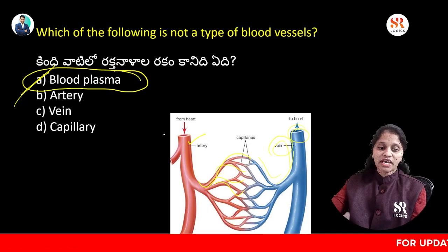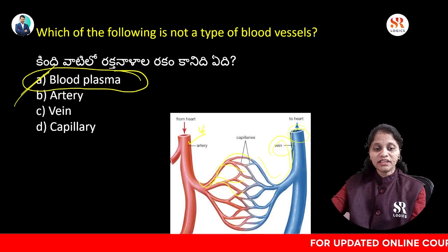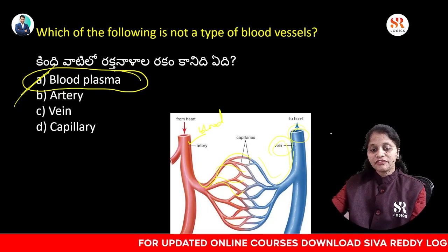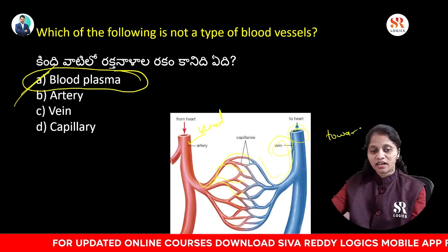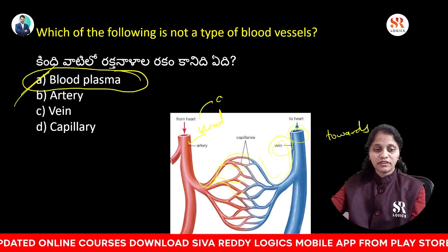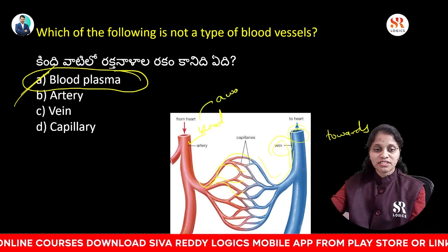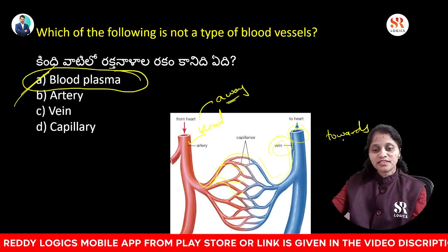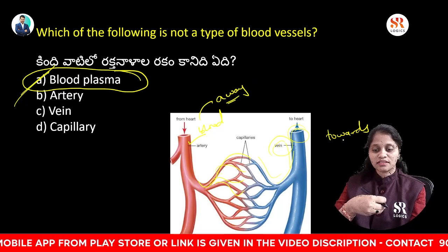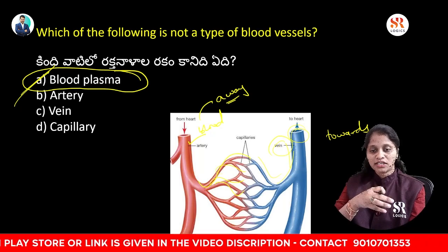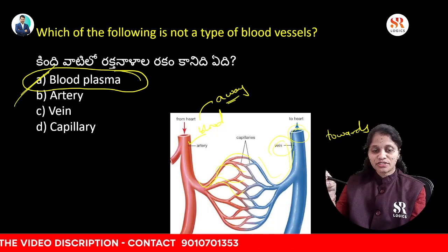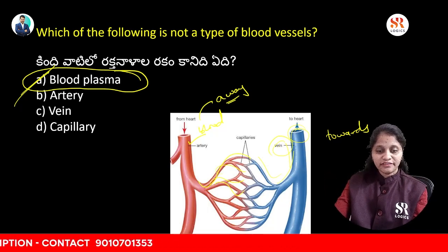Arteries carry blood away from the heart and veins carry blood towards the heart. Arteries have pulse flow and veins have smooth flow. These are the types of blood vessels, but blood plasma is not a blood vessel.